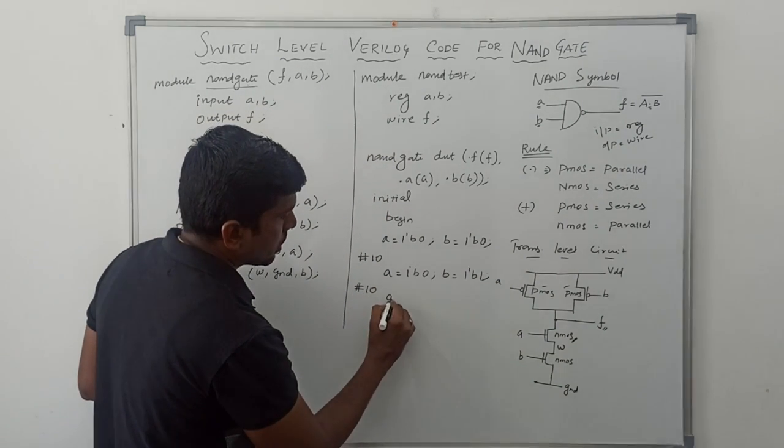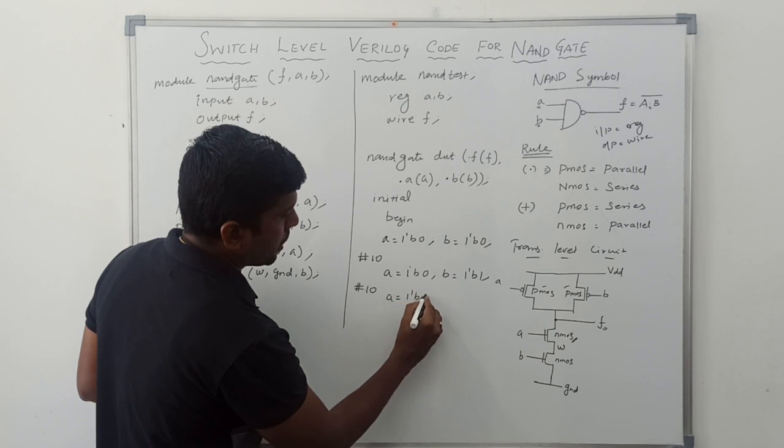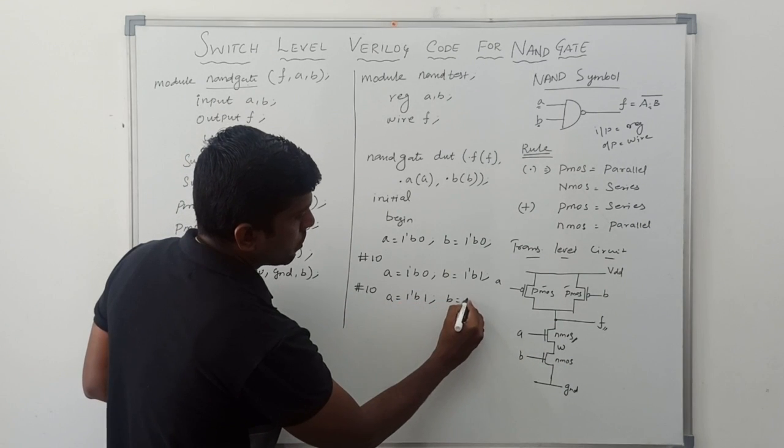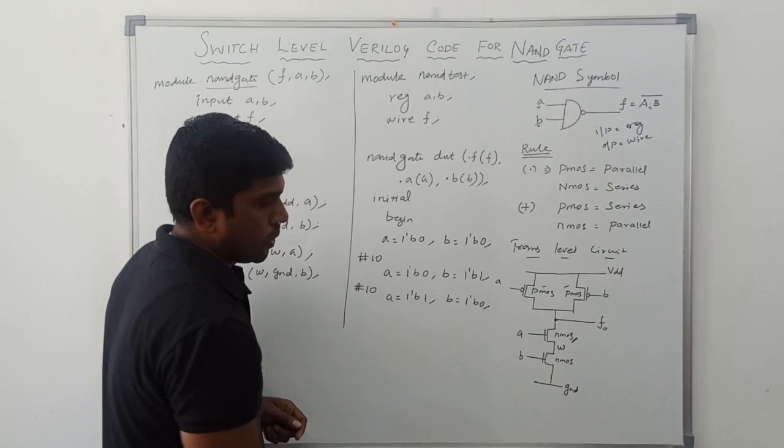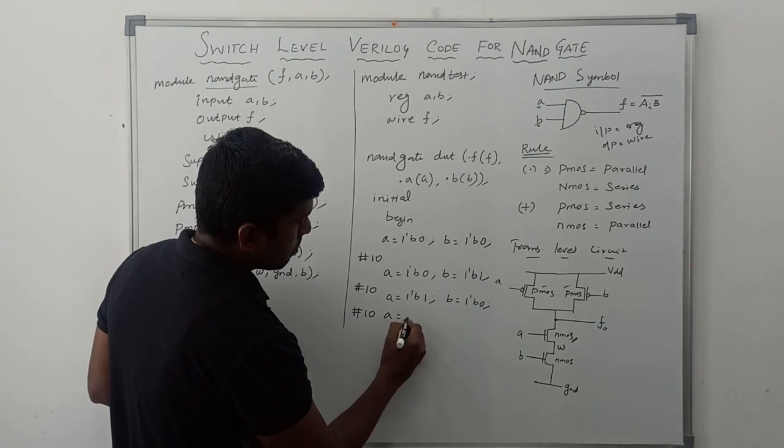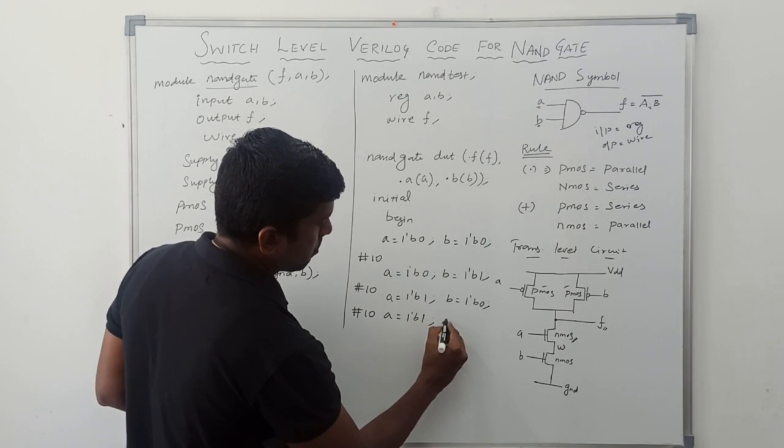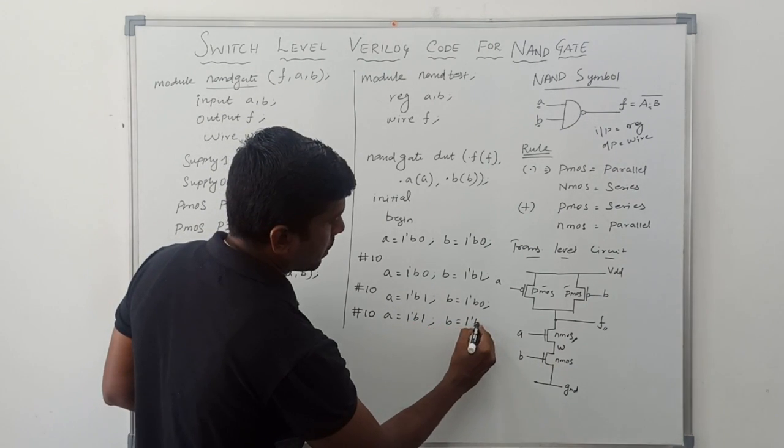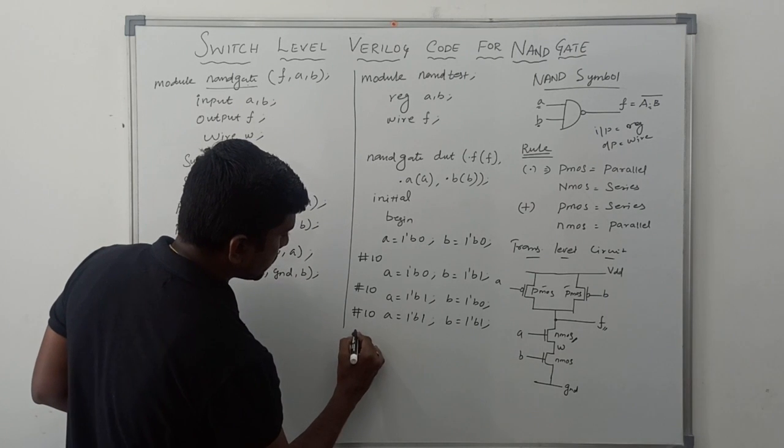Then, after 10 nanoseconds, A value goes to 1'b1, B value goes to 1'b0. Then, after 10 nanoseconds, both the values are set to be 1. A equal to 1'b1, B equal to 1'b1.